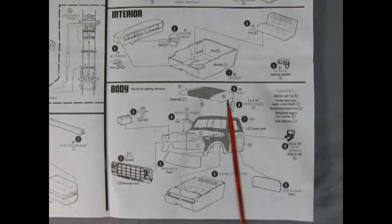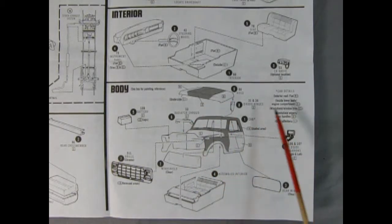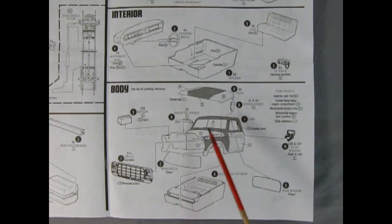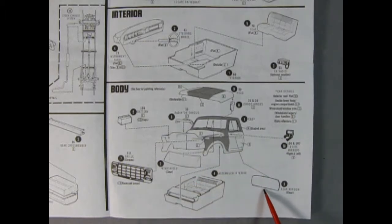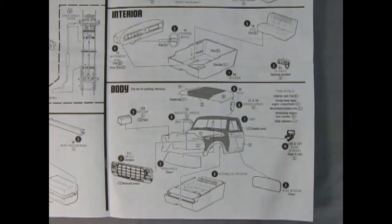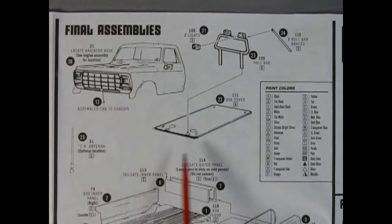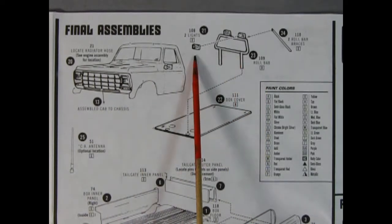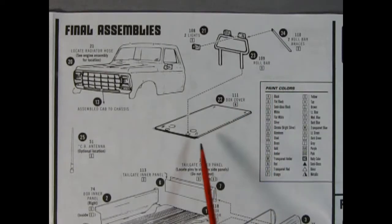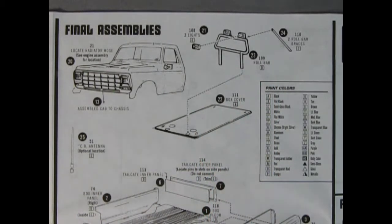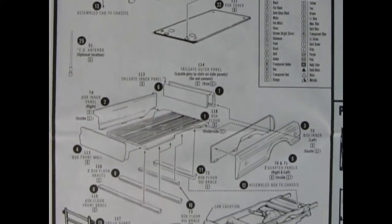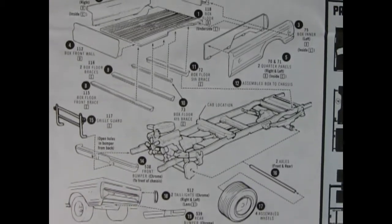Down below we have our body. So we've got a separate hood. We've got our body as well. We've got these two nice hood hinges, a radiator shroud, a battery, the front grille and then our windshield and our back cab window as well as the two side mirrors and then our interior just pops up from underneath. In our final assemblies we have the cab being dropped into place. There's our roll bar with the optional lights up top as well as two braces. We have our box lid cover and our CB antenna and a nice paint chart right here.